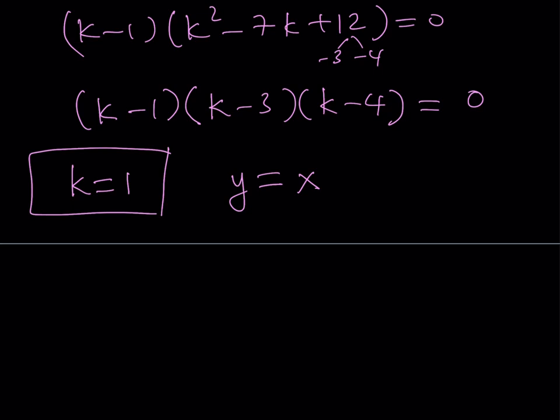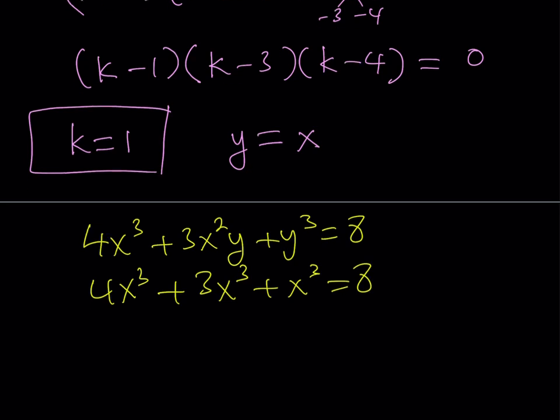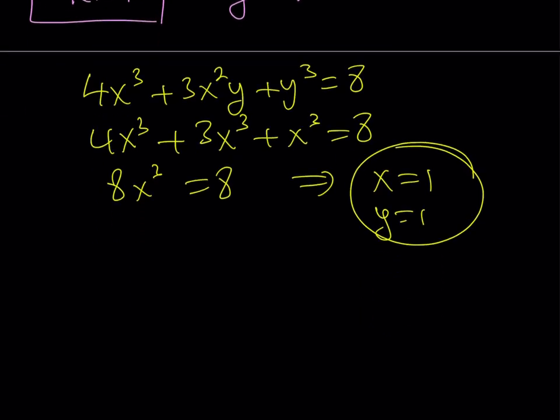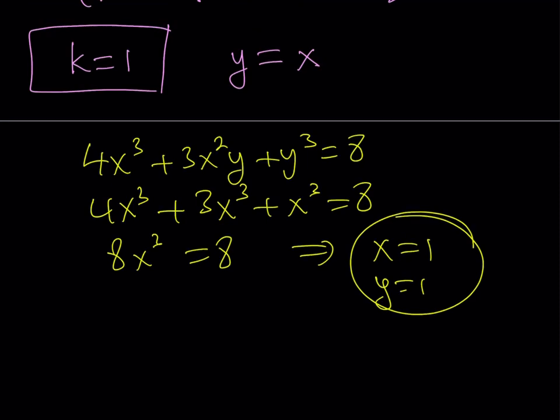So let's go ahead and look at the original system and just plug in y equals x. For example, if I take the first equation, 4x³ plus 3x²y plus y³ is equal to 8. If I replace y with x, I get 4x³ plus 3x³ plus x³ is equal to 8. And from here, I get 8x³ equals 8, which means x equals 1. Since y is equal to x, that also means y equals 1. So I get my solution from here as an ordered pair, 1 comma 1.